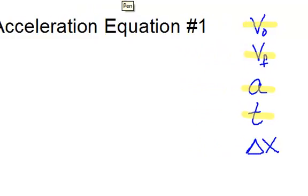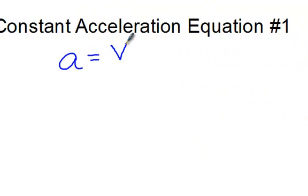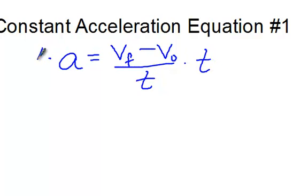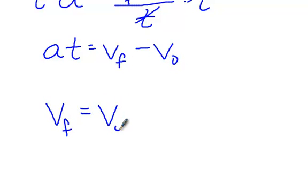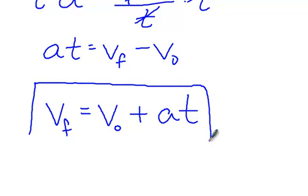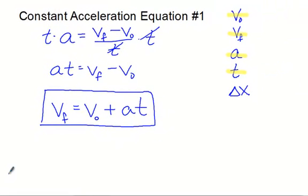We said that acceleration equals (VF − V₀) / T, and we want to solve for the final velocity. Multiplying both sides by T gets rid of the time on the right, leaving AT = VF − V₀. Bringing V₀ to the other side gives us the final velocity equals whatever its initial velocity is plus its rate of acceleration times the time it accelerates. So there's your first of the big four constant acceleration equations: VF = V₀ + AT, relating initial velocity, final velocity, acceleration, and time.